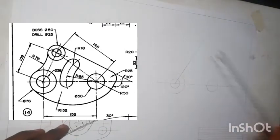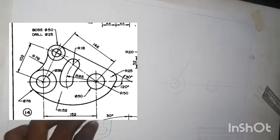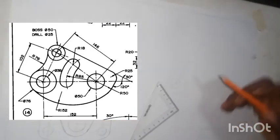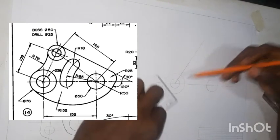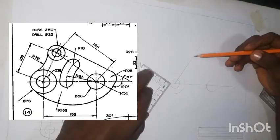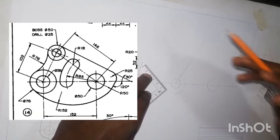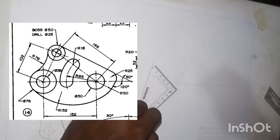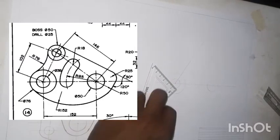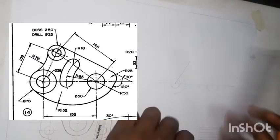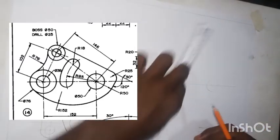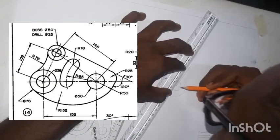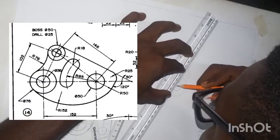The distance between the middle of the circle and the center of the circle is 52mm — that is, 51mm, which is 5.1 centimeters.